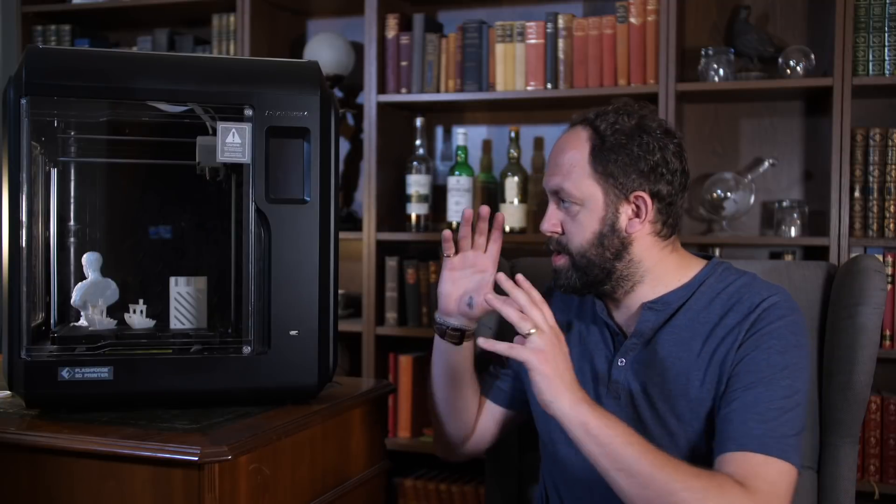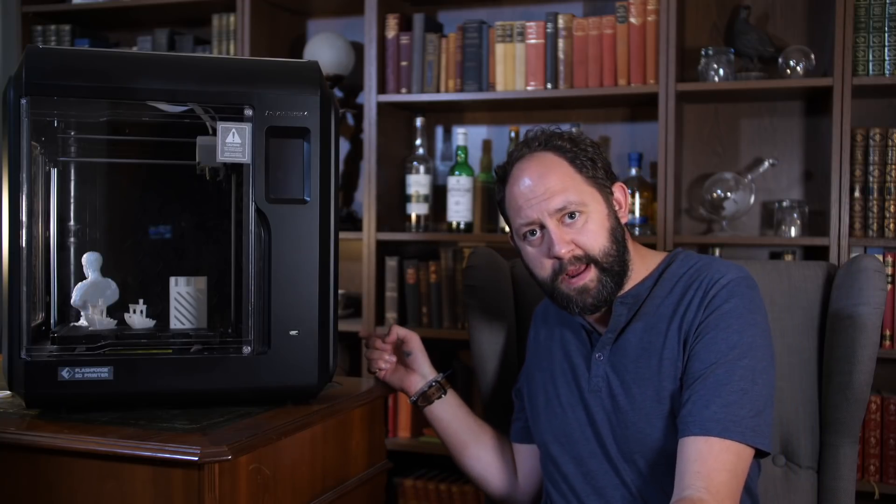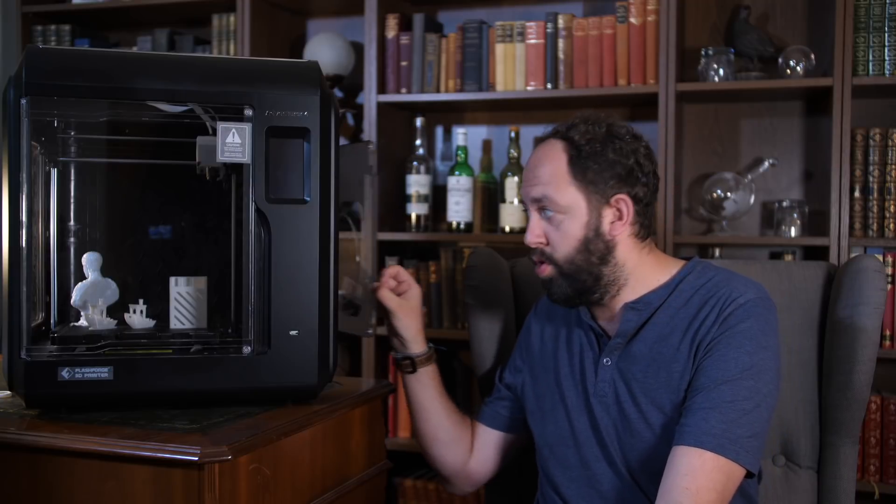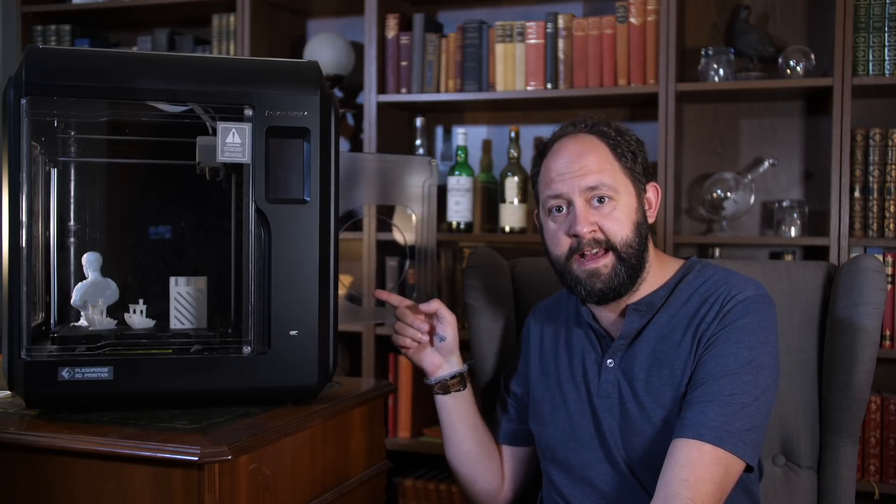So what do you need to do to assemble the Adventurer 4 and get that up and going? Nothing. All you've got to do is plug the power cable in, plug the nozzle in which I'll get onto in a minute, put some PLA or other filament in there, and you're done.